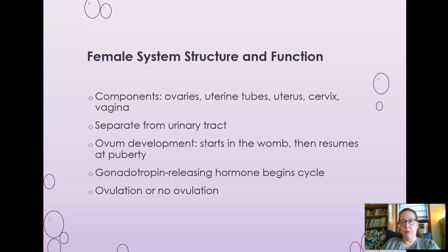Gonadotropin-releasing hormones, produced by the hypothalamus and sent to the pituitary, are what triggers the menstrual cycle to start. They start producing gonadotropin-releasing hormones, which cause LH and FSH to be released in a certain pattern. During reproductive years, a woman is usually ovulating, but there are some instances where there could be no ovulation — before puberty and after menopause, there is no ovulation.